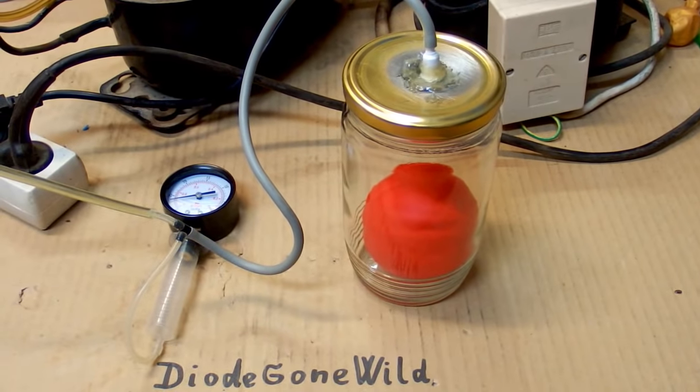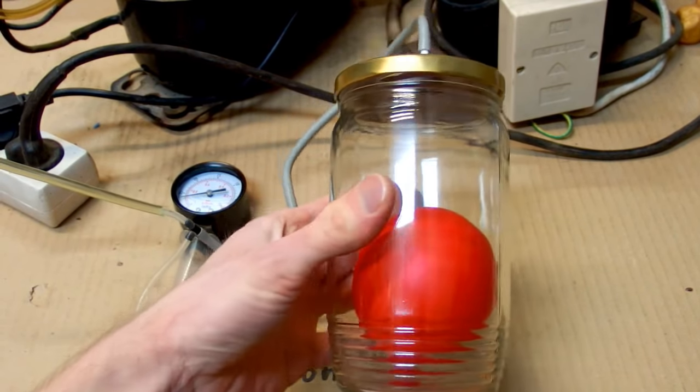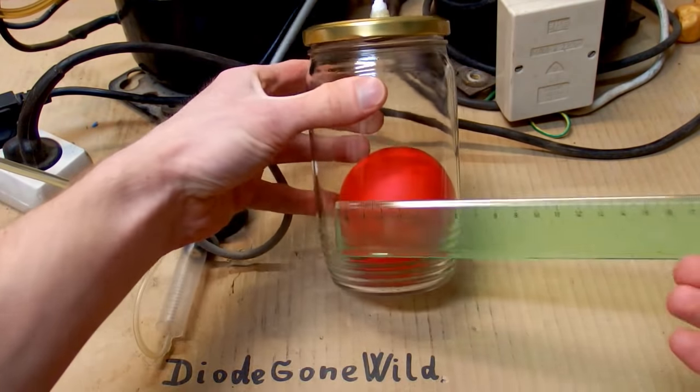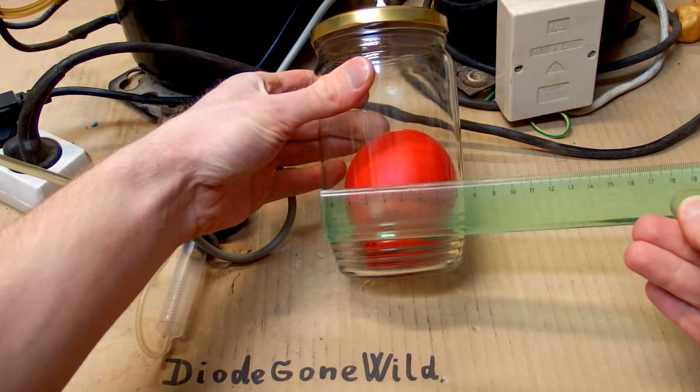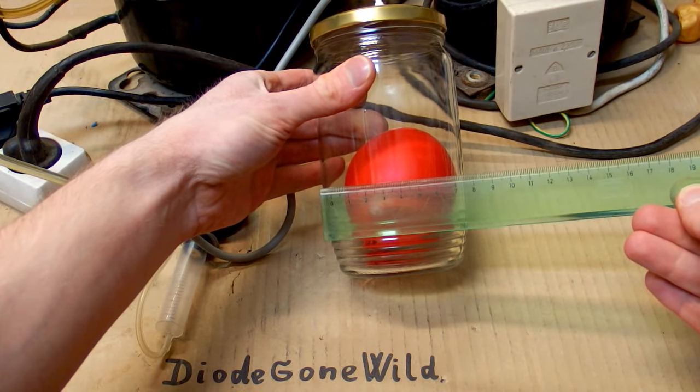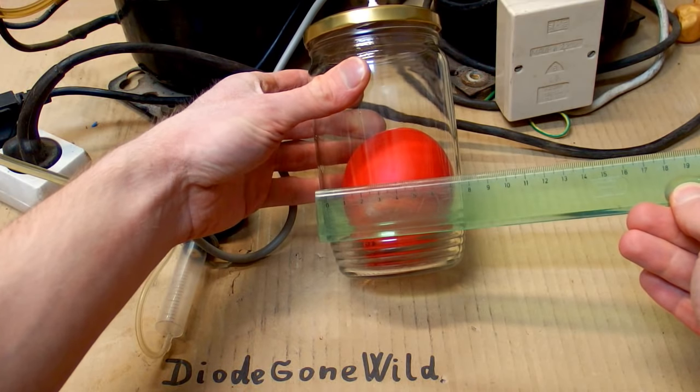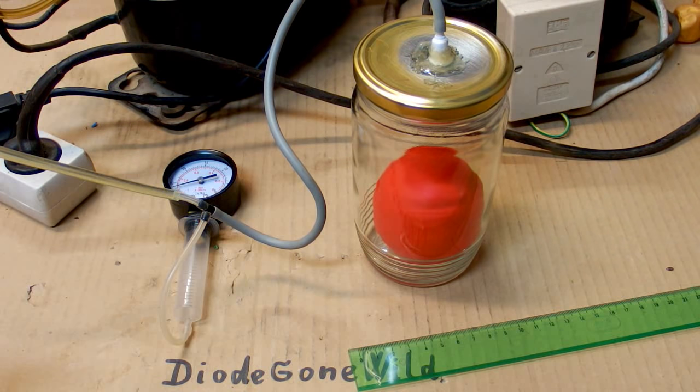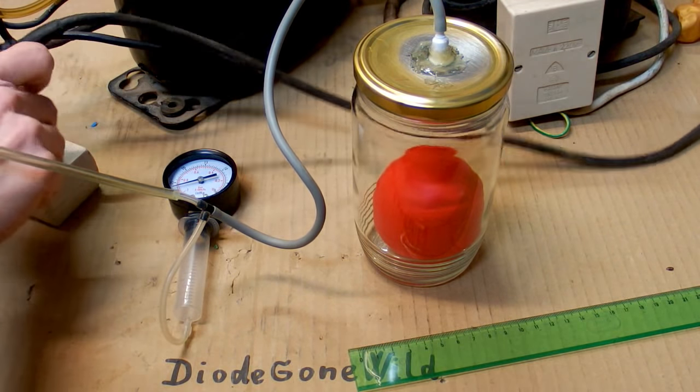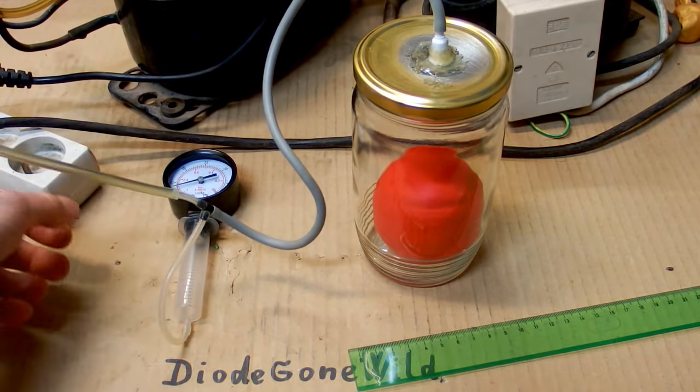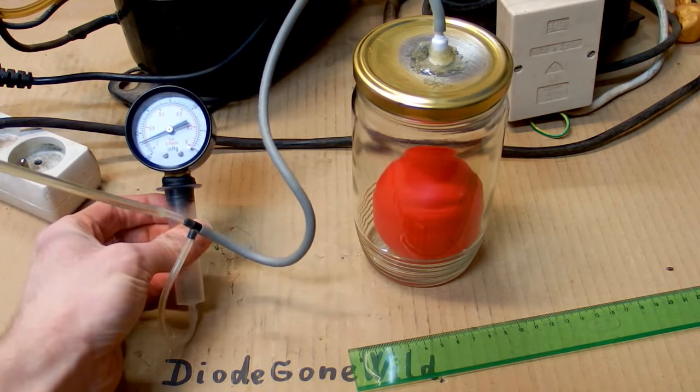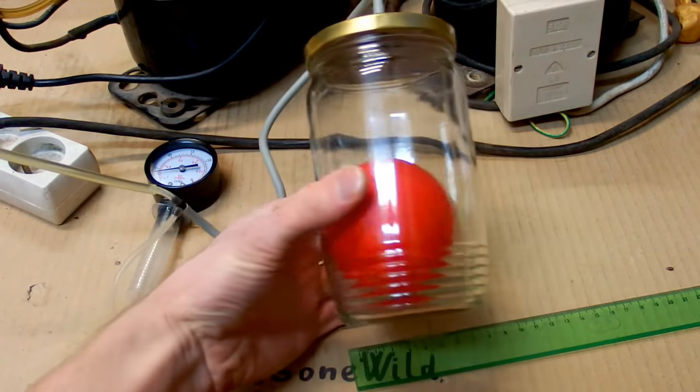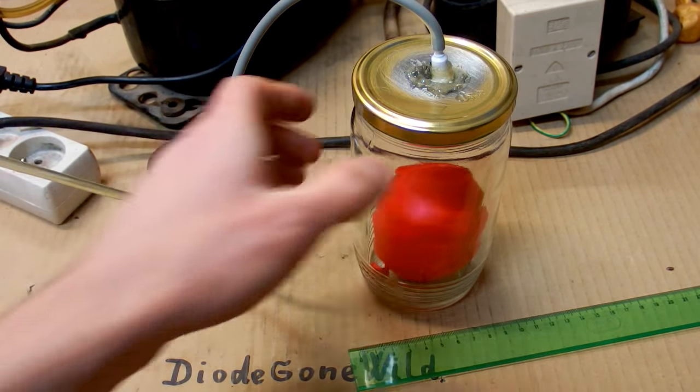And still no implosion. And the balloon is quite big. The diameter of it is now about almost 7 centimeters. Now let's turn the pump off. But it doesn't leak much. So it's still under a nice vacuum. You can see the balloon is quite big now.